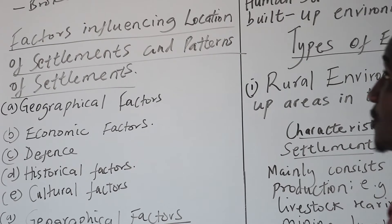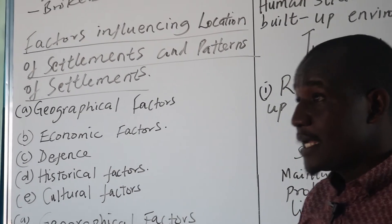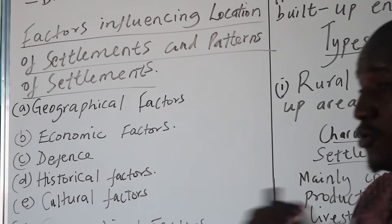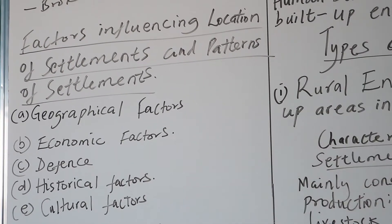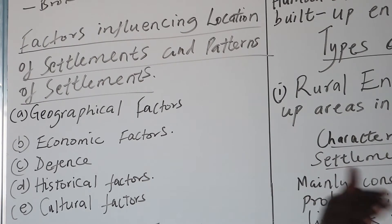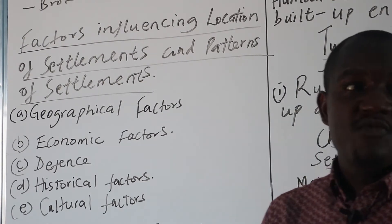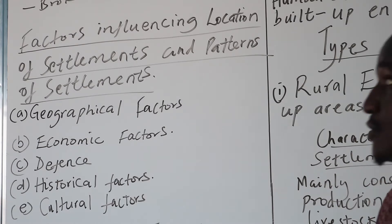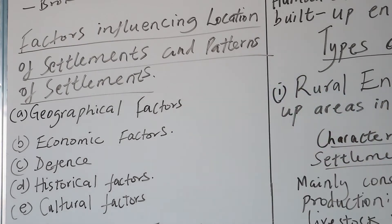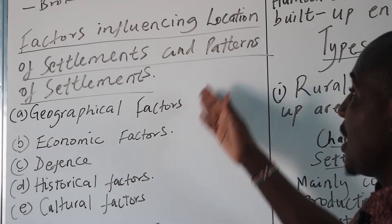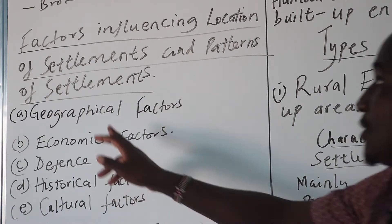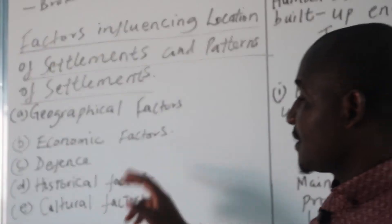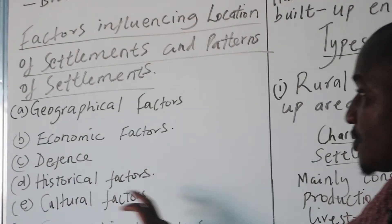For the factors influencing location of settlements and patterns of settlements — these build-ups, how do they occur? What influences when you realize that we have a town somewhere, we have people living in a particular area? Those are the factors we will consider here. We have listed general factors: geographical factors, economic factors, defence factors, historical factors, and cultural factors.